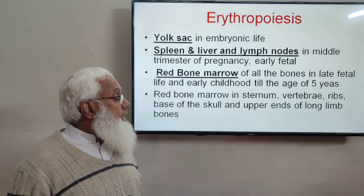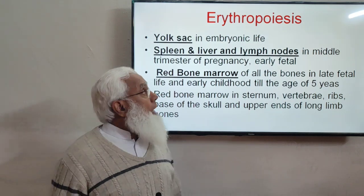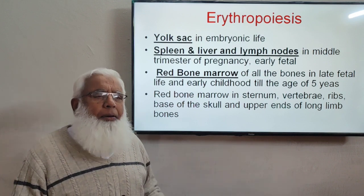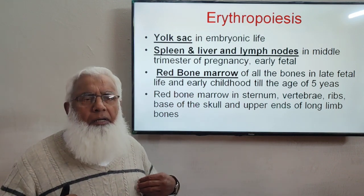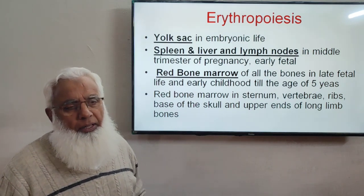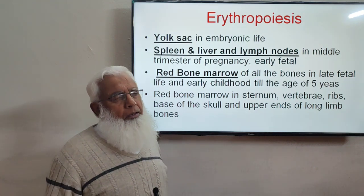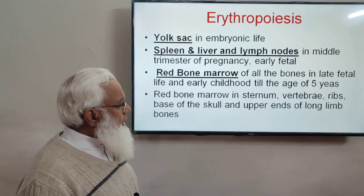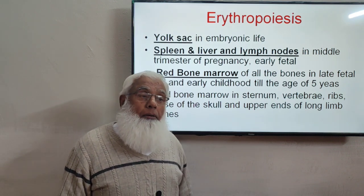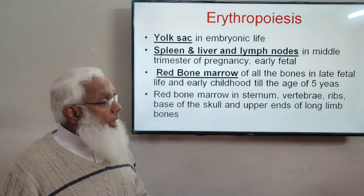In adult life, RBCs are produced wherever red bone marrow is present: the vertebrae, sternum, ribs, base of the skull, and the upper ends of long bones — but not in the shafts of long bones. So red bone marrow is the site of RBC production throughout all extra-uterine life after age five.